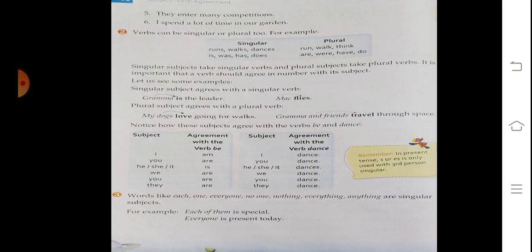Plural subject agrees with plural verb: 'My dogs love going for walks.' 'Grandma and friends travel through space.' Notice how the subject agrees with the verbs be and dance. The subject should agree. To check agreement, we'll look at a table.